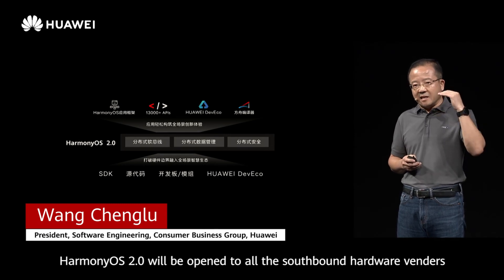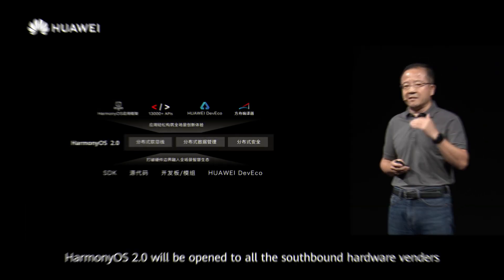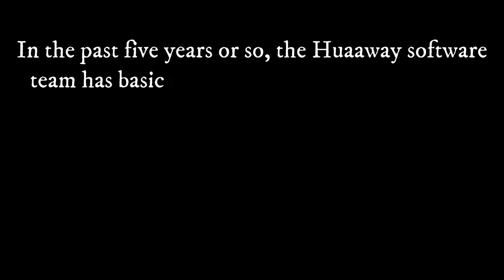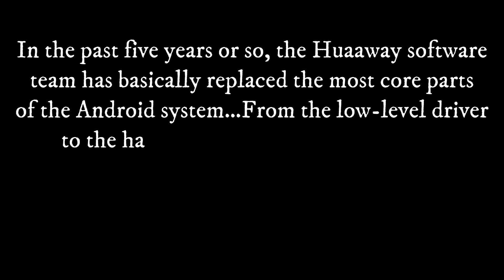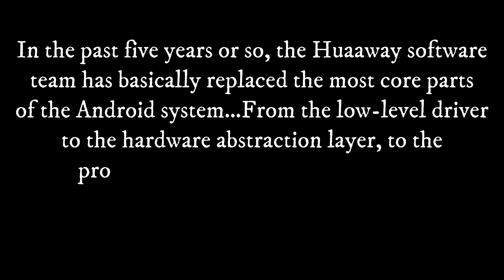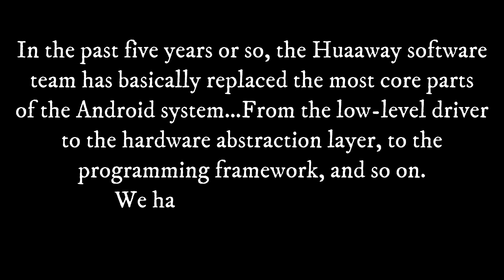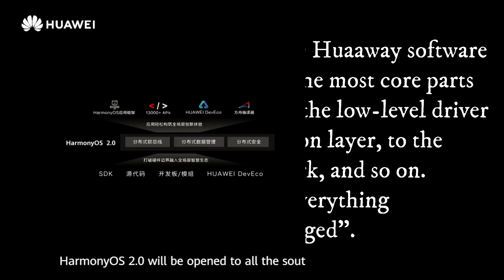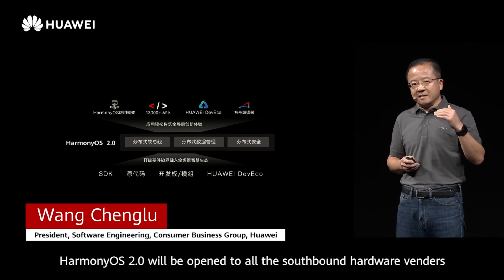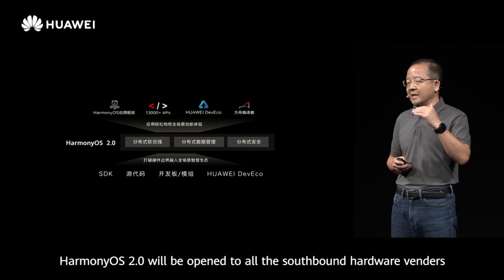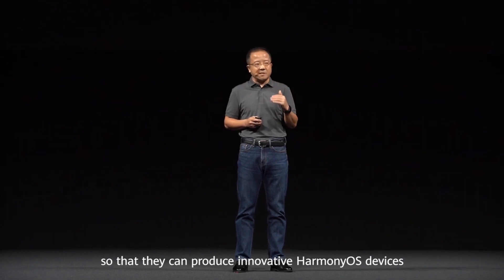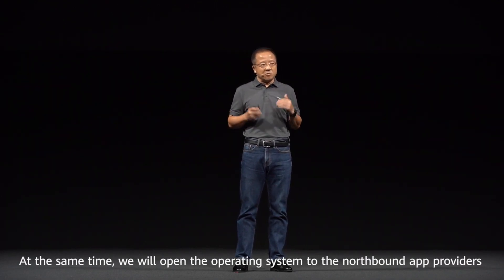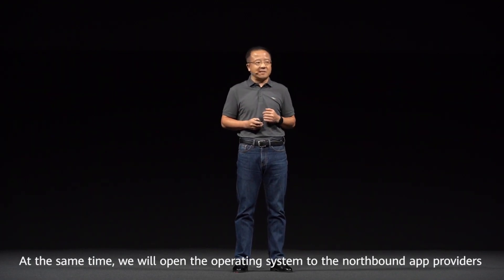The president of Huawei's consumer business software, Mr. Wang Chenglu, said that in the past five years or so, the Huawei software team has basically replaced the most core parts of the Android system — from the low-level driver, to the hardware abstraction layer, to the programming framework, and so on. We have changed everything that can be changed. Wang Chenglu has also repeatedly emphasized that HarmonyOS was born not to replace Android; however, it is here to compete with and surpass Android. It hopes to be a new generation operating system for the IoT era.